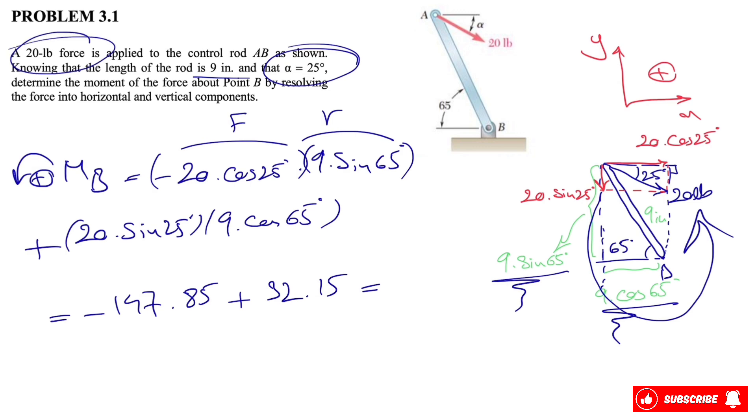Since all the dimensions are based on inch and pound, the moment will be minus 115.7 pound-inch. That would be the final answer. The negative sign in here shows that the moment is counterclockwise.